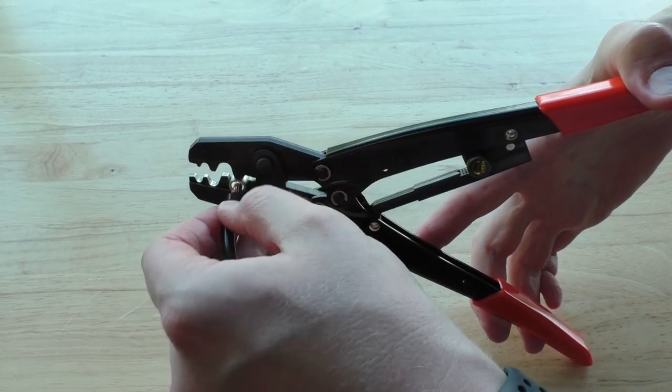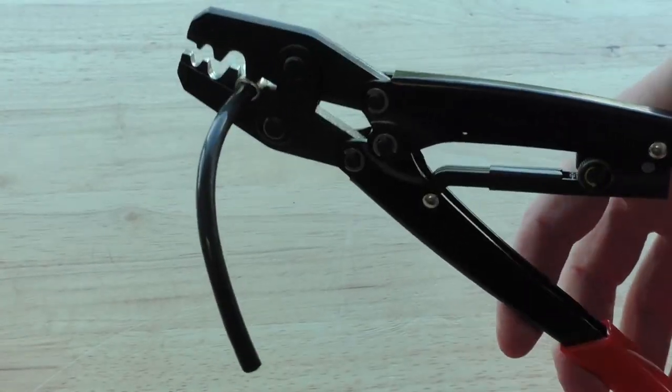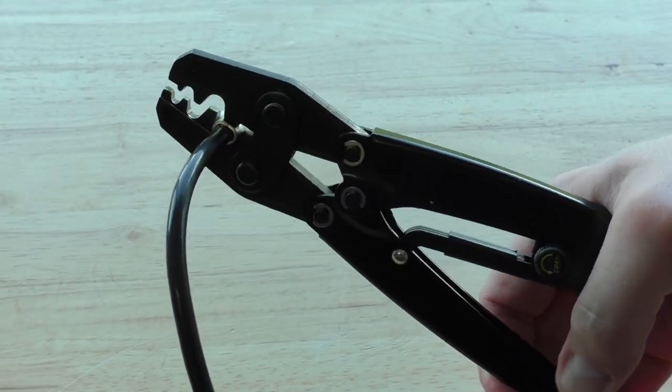And then you can load the wire in there afterwards. So once you've got that secure with the wire inserted, just squeeze down on the handle and crimp it down.